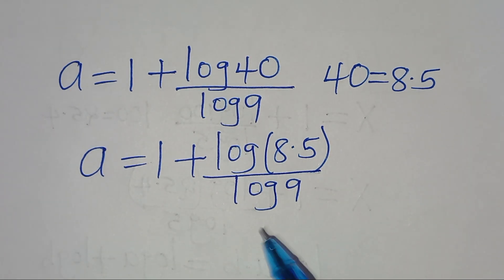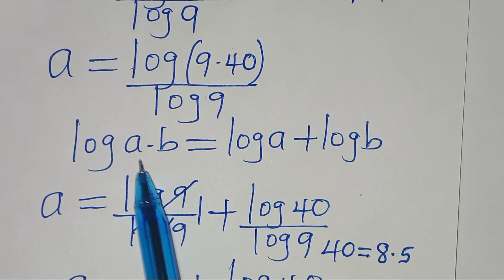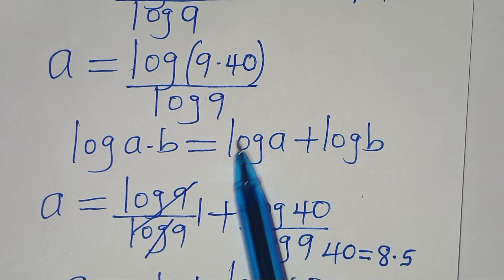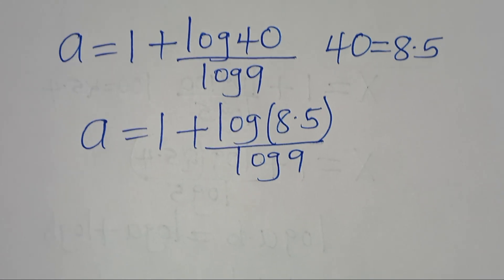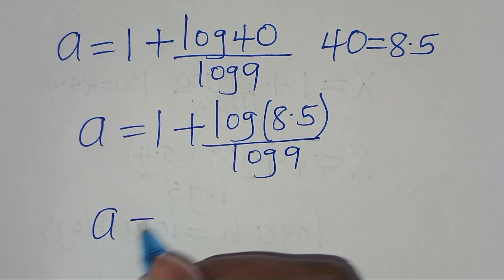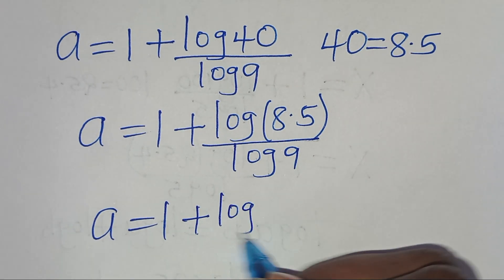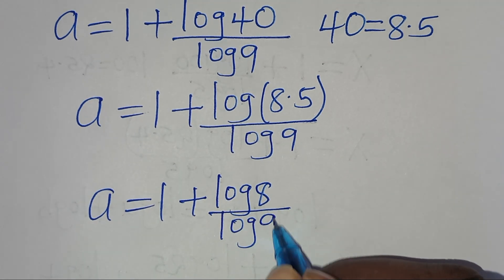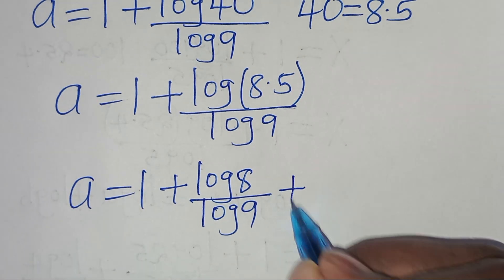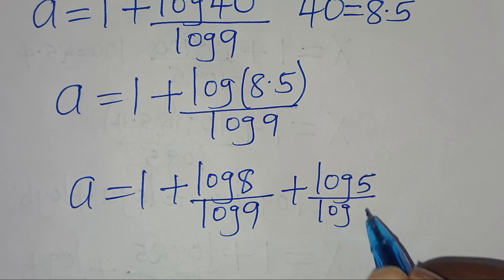Again, we have log(8 times 5), this is in the form of log(a times b), which can be expressed as log(a) plus log(b). So now we have a is equal to 1, plus log 8 divided by log 9, then plus log 5 divided by log 9.